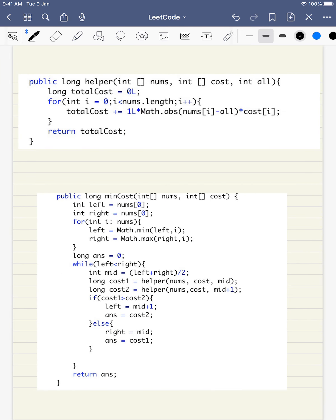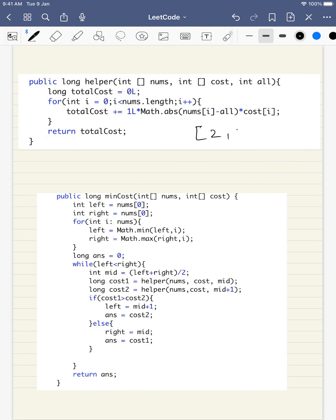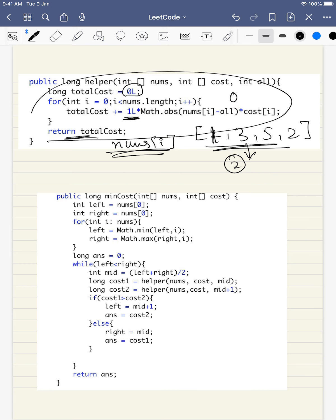We will be having a helper class. What it is doing is calculating the cost required to convert all numbers to a base number. For example, with initial array 1, 3, 5, 2, what is the cost required to convert all of these numbers to 2? That is what we will be doing here. And why I am putting this as 0L and here also 1L, rather than just 0 and 1, is because this nums[i] is an integer and will result in overflow. That is why I am converting this to 1L so the number won't overflow.